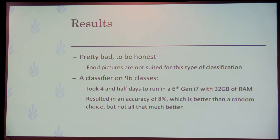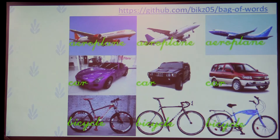It took four and a half days on an XPS desktop with 32 GB of RAM for 96 classes, and the total accuracy was 8% — which is better than random. The original code uses pictures where the objects are localized and backgrounds removed. With that kind of segmentation, bag of words might work. But it wasn't suitable for me. I was also told I should use binary classifiers and combine them instead of a 96-class classifier, but I didn't follow up on that because I learned about deep learning and transfer learning.